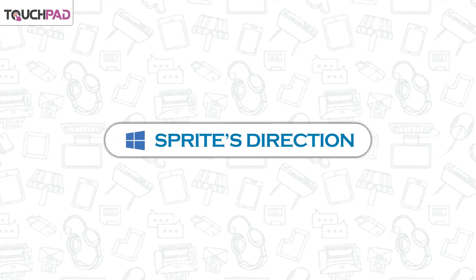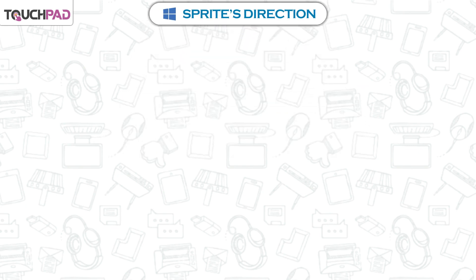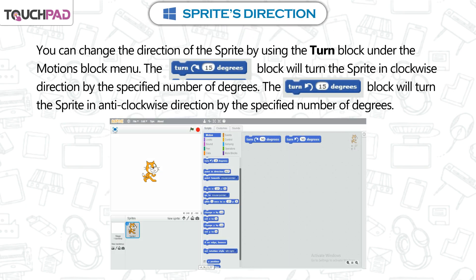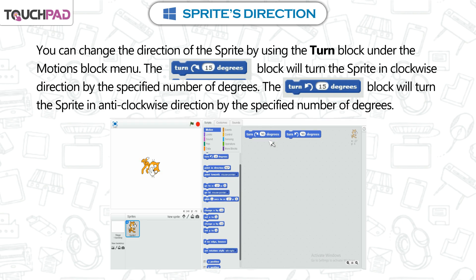You can change the direction of the sprite by using the Turn block under the Motions block menu. The Turn 15 degrees block will turn the sprite in a clockwise direction by the specified number of degrees.